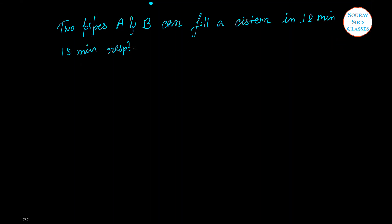Next problem: Two pipes A and B can fill a cistern in 12 minutes and 15 minutes respectively, while a third pipe C can empty it in 6 minutes. Both A and B pipes are open together for five minutes in the beginning, and then the third pipe C is also opened. In what time will the cistern be emptied?